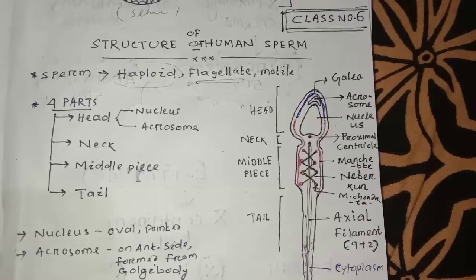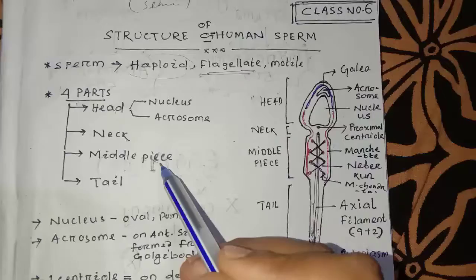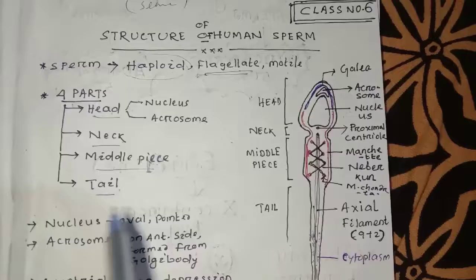In the same way, we can also identify the parts of the sperm: the head, neck, middle, and tail. The middle part contains the nucleus and acrosome.